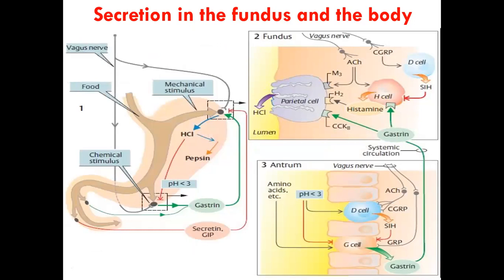Here we see the receptors to which these neurotransmitters or hormones bind. In the fundus, parietal cells produce hydrochloric acid and chief cells produce pepsinogen. The vagus nerve releases acetylcholine, which via M2 receptors stimulates the parietal cells to release hydrochloric acid. Acetylcholine can also stimulate the ECL cells — also called H cells — which are histamine-producing cells. The H cells produce histamine, which binds to histamine receptors to increase production of hydrochloric acid.